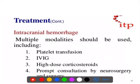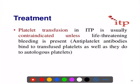If there is a risk of intracranial hemorrhage, you give multiple modality treatment: platelet transfusion, immunoglobulin, corticosteroids, and simultaneous neurosurgical consultation. Usually platelet transfusion is avoided because the antibodies will also destroy the transfused platelets; however, it can be given if there is life-threatening bleeding.